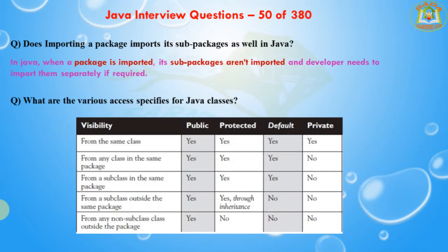The next question is: what are the various access specifiers for Java classes? There are different access specifiers available. The four access specifiers are: public, protected, default, and private.